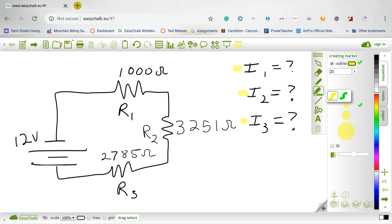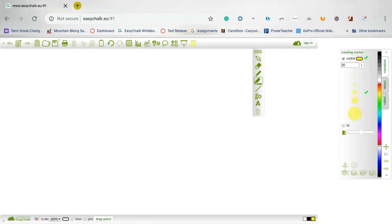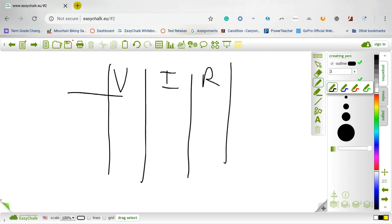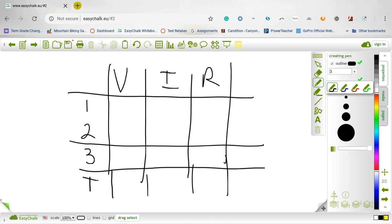Let me show you a quick way to organize things and hopefully make it easier for you. We're going to create something that we call a VIR square. We list the voltage, current, and resistance, and we're going to make a chart with each resistor - resistor one, resistor two, resistor three, and a total.